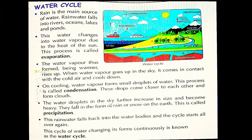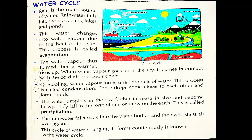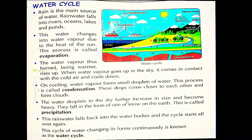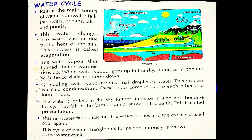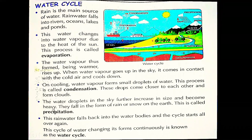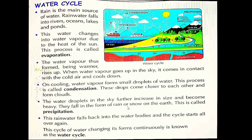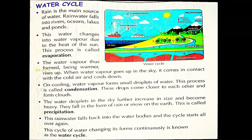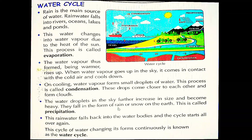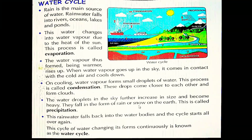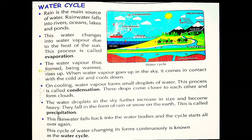The water droplets in the sky further increase in size and become heavy. Aur ye paani ki bunde upar aasmaan mein apna size bada karti jaati hain, badi ho jaati hain, to heavy ho jaati hain, bhaari bhi ho jaati hain. They fall in the form of rain or snow on the earth — ya toh baarish ke roop mein ya baraf ki tarah neeche girti hain. This is called precipitation.